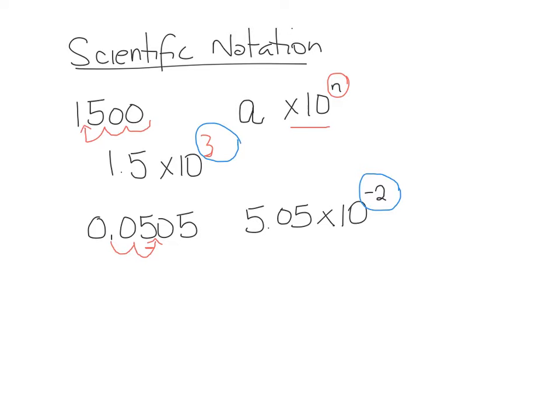The sign on the exponent tells you the direction you moved your decimal place — negative for a small number less than 1 (decimal moves right), positive for a large number (decimal moves left). The exponent tells you how many spots you moved; the sign tells you if it's a big number or a small number.